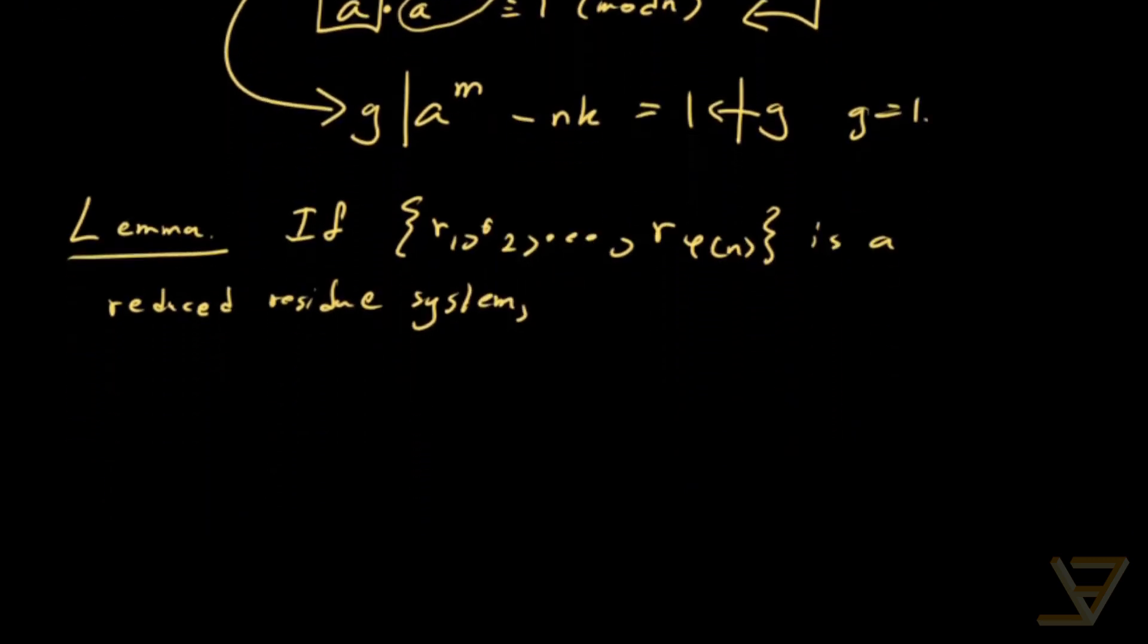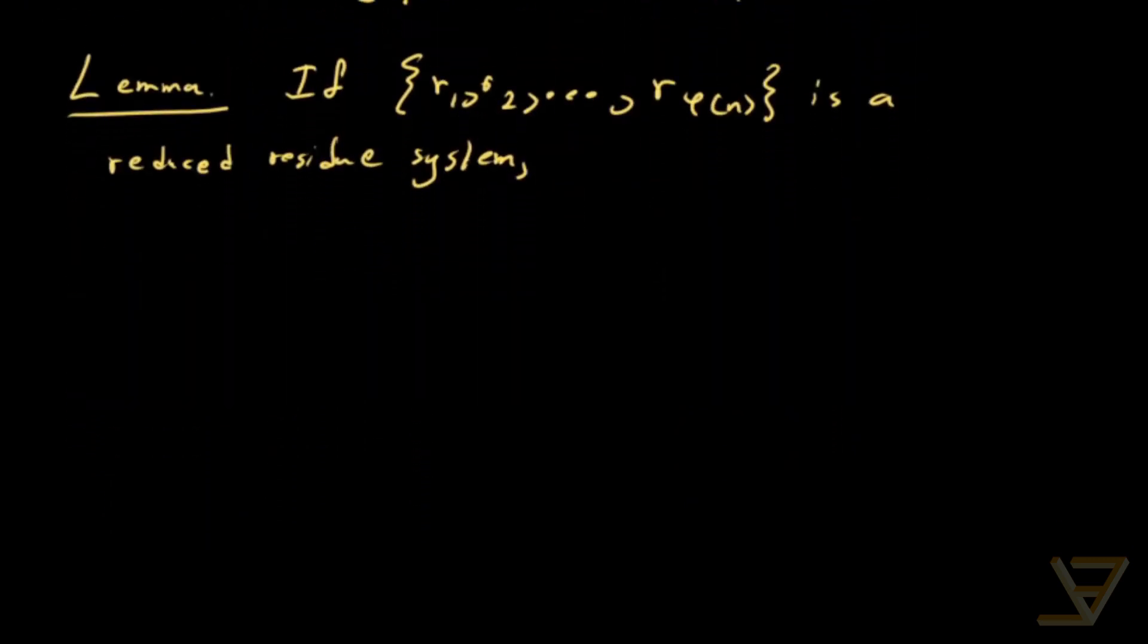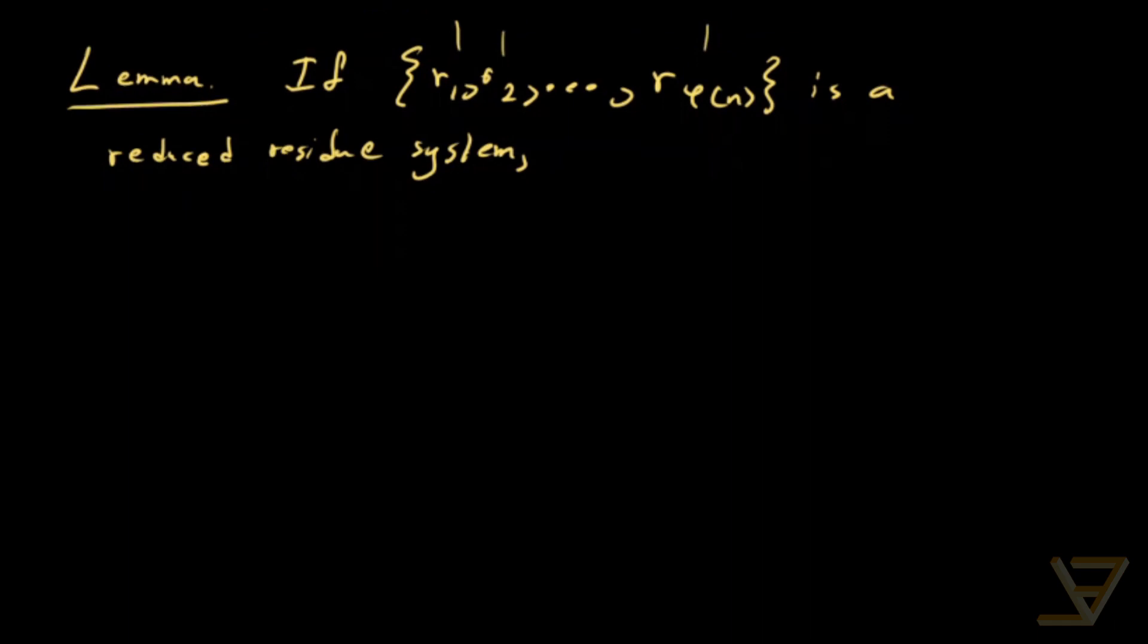and by reduced residue system I mean that there is one representative from every class that is coprime to n.